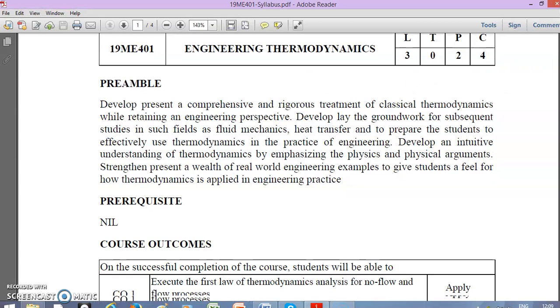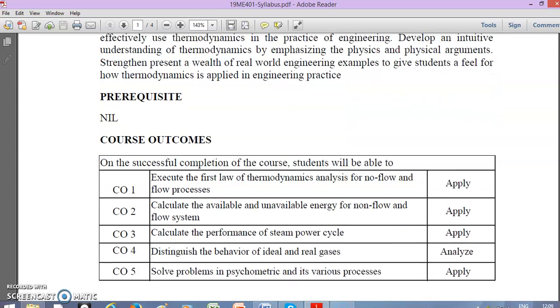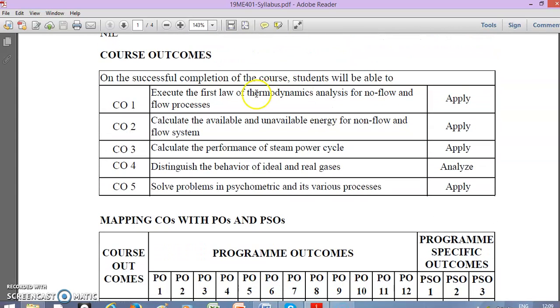Before moving on to the syllabus content, let's go through the course outcomes listed for the subject. We have 5 course outcomes with respective Bloom's taxonomy levels. The first course outcome is to execute first law thermodynamic analysis for non-flow and flow processes. Non-flow is for closed systems and flow process is for open systems. Of course, we'll get familiar once the subject progresses. The Bloom's taxonomy level is apply.